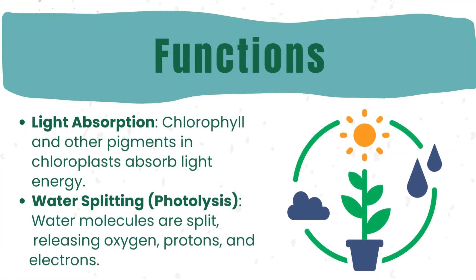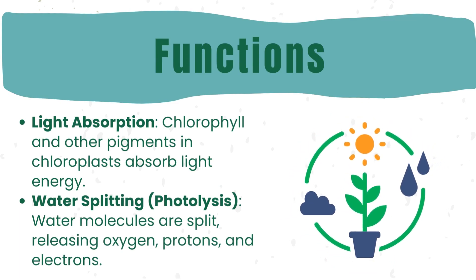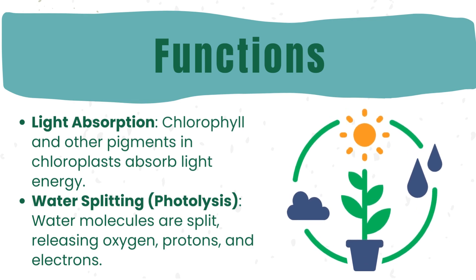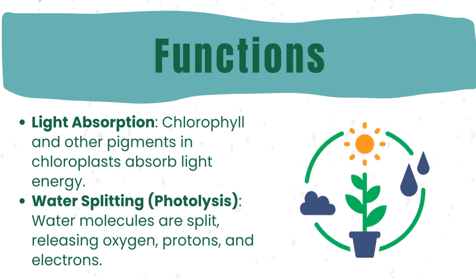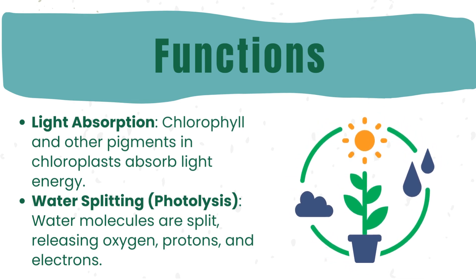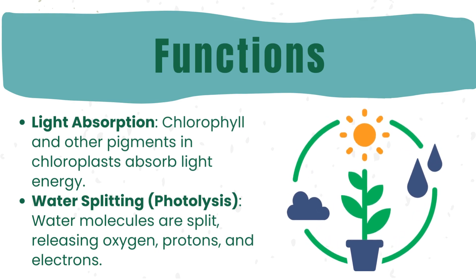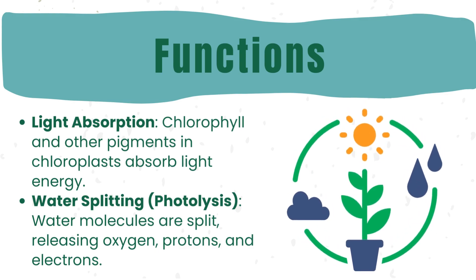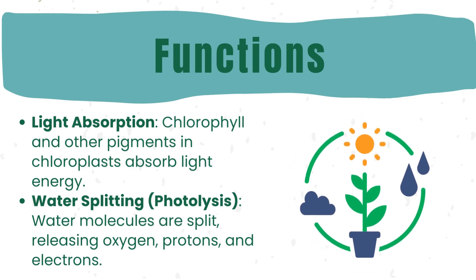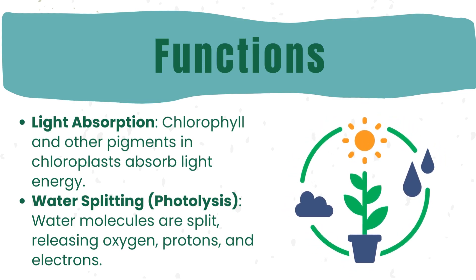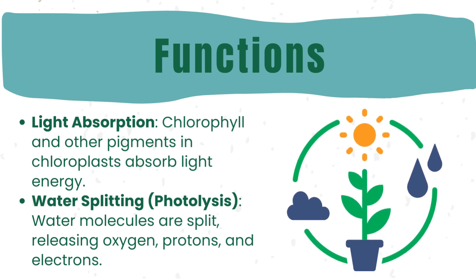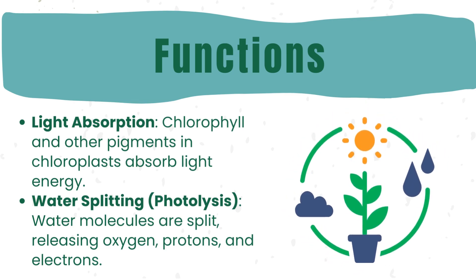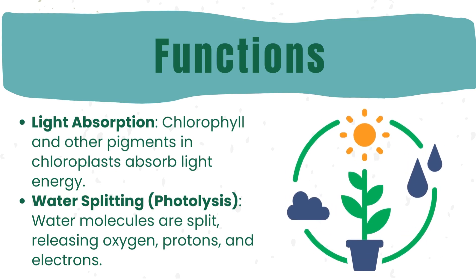Chloroplasts in plants and algae have two primary functions during photosynthesis. Firstly, they absorb light energy using pigments like chlorophyll. Secondly, they undergo a process called water splitting, or photolysis, where water molecules are split to release oxygen, protons, and electrons. These functions are essential for the production of glucose and the generation of oxygen, sustaining life on Earth.